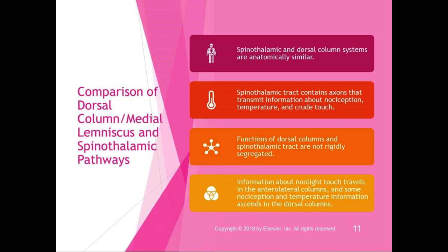To compare: the DCML and spinothalamic pathways are anatomically similar — both have peripheral axons going to the dorsal root ganglion and both project to the thalamus. However, the spinothalamic tract contains axons transmitting nociception, temperature, and crude touch via A-delta fibers. The functions of the dorsal column and spinothalamic tract are not rigidly segregated; some nociception and temperature information can ascend the dorsal columns. There are multiple roads to the brain for sensory information.